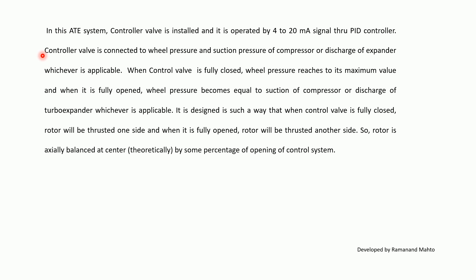The control valve is connected to the wheel pressure and suction pressure of the compressor, or discharge of the expander, whichever is applicable. When the control valve is fully closed, wheel pressure reaches its maximum value, and when it is fully open, wheel pressure becomes equal to the suction of the compressor or discharge of the turbo expander. The system is designed so that when the control valve is fully closed, the rotor is thrust to one side, and when fully open, to the other side. Thus, the rotor is balanced at center by some percentage opening of the control valve.